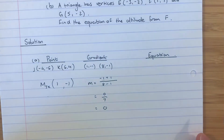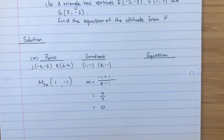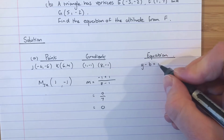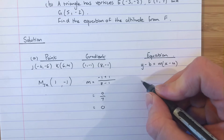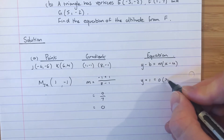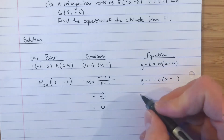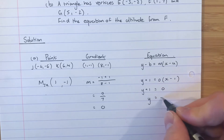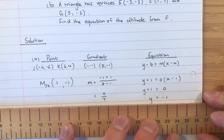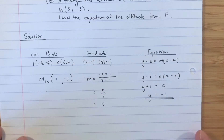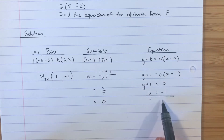A gradient of zero means a horizontal line, so the median is horizontal. We can follow through with y − b = m(x − a): y − (−1) = 0 · (x − 1), giving y + 1 = 0, so y = −1. The more astute viewer will say they knew the answer when they saw the shared y-coordinate — jumping straight to that answer is fine. Following through the full process every time is equally valid.